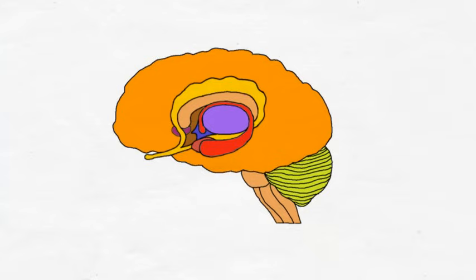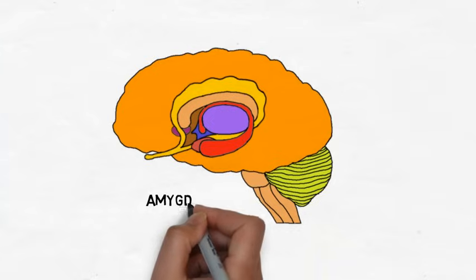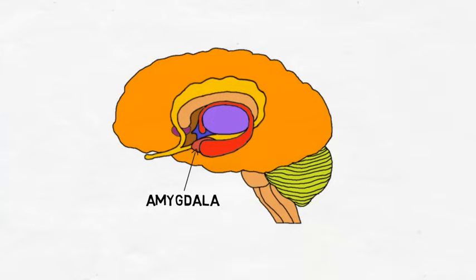Regardless, these are some structures that are often included in the limbic system. The amygdala is an almond-shaped collection of nuclei found in the temporal lobe that seems to be especially involved with fearful and anxious emotions.